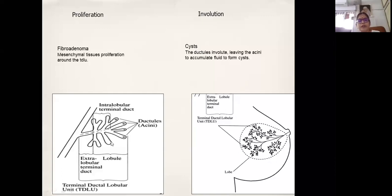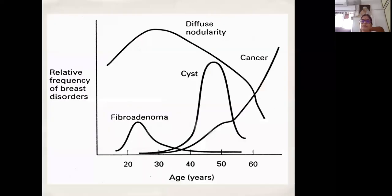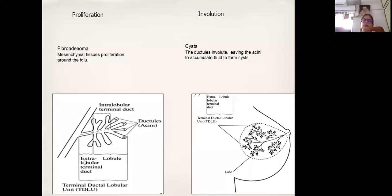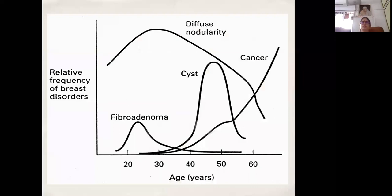With cysts — when you have the acinar tissues lining the little ductules, and when involution happens, it happens in the ductule first. When the ductules involute and close off, the fluid that is normally produced has no egress outside. It balloons out and swells — that is what we call a cyst. Some are very small microcysts; some become bigger and palpable. Because this happens around involution, cysts are more common in the perimenopausal age group — after 40, 45 till menopause, and even two to three years after menopause.